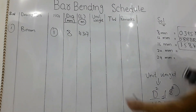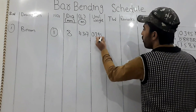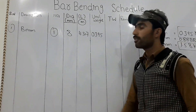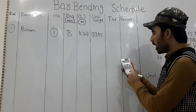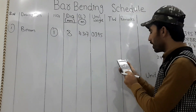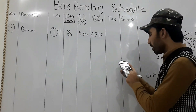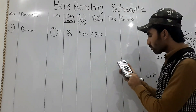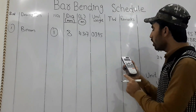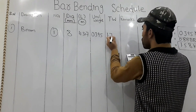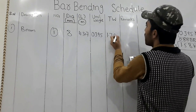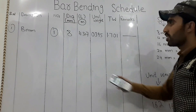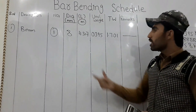The unit weight is 0.395 kg per meter length for 8mm steel. The total weight will be: 0.395 × 4.307 = 1.0701 kg. In the remark column you can note the type of steel, for example 'steel' or the structure name.